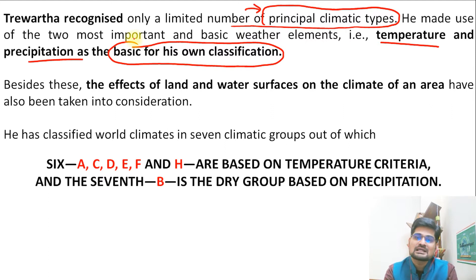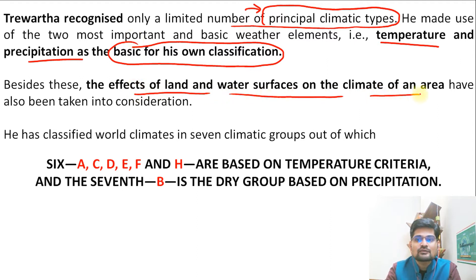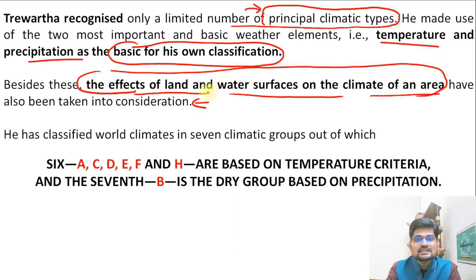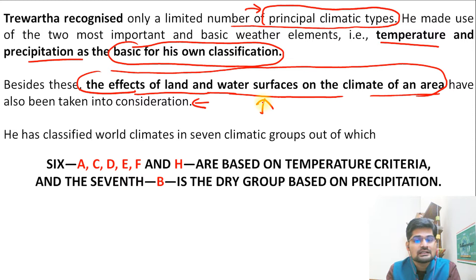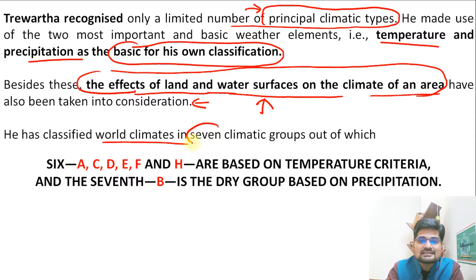Temperature and precipitation came from the same Köppen classification. Besides these, the effects of land and water surfaces on the climate of an area have also been taken into consideration — this is the modification we are talking about. The impact of local topography and land and water surfaces, absent in the earlier classification, was incorporated by Trewartha. He classified the world climates into seven climatic groups.